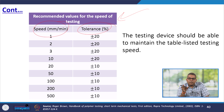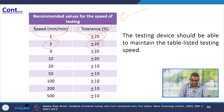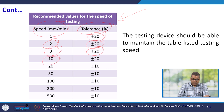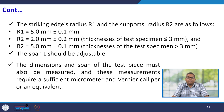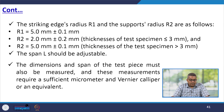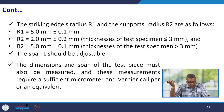The test device should be able to maintain the recommended testing speeds: 1 mm/min ± 20%, 2 mm/min ± 20%, and 5 mm/min ± 20%. At higher speeds of 50 mm/min and up to 500 mm/min, a tolerance of ± 10% should apply. The striking edge radius R1 must be 5 ± 0.1 mm. The support radius R2 must be 2 ± 0.1 mm for specimen thickness ≤ 3 mm, or 5 ± 0.1 mm for specimen thickness > 3 mm. The span L should be adjustable. The dimensions and span of the test piece must be measured using a suitable micrometer and vernier caliper or equivalent.